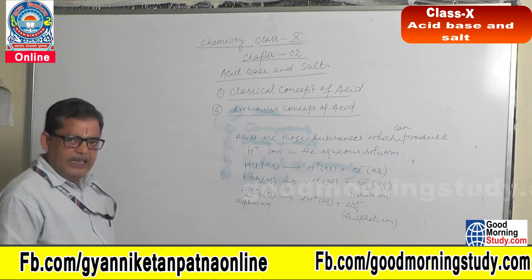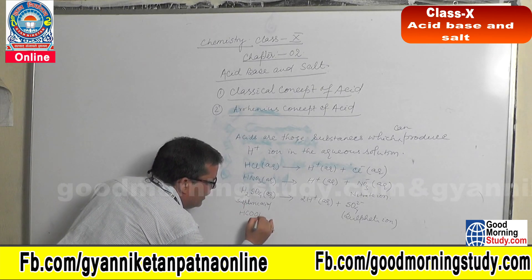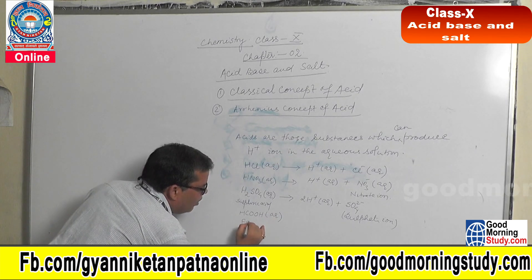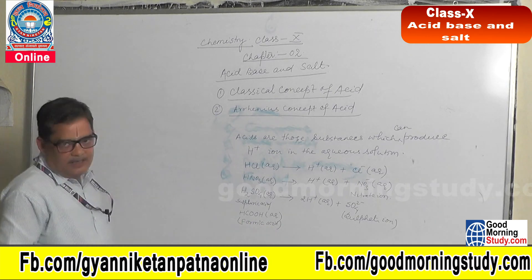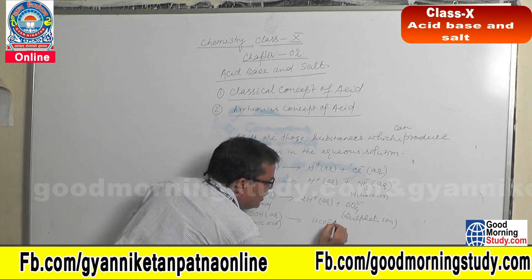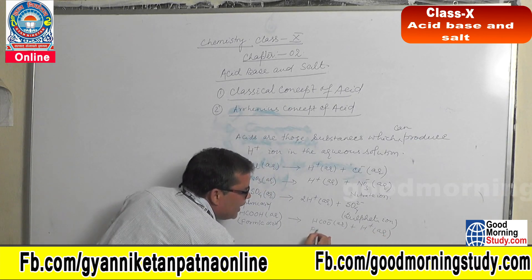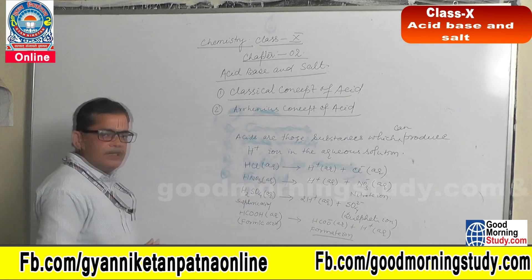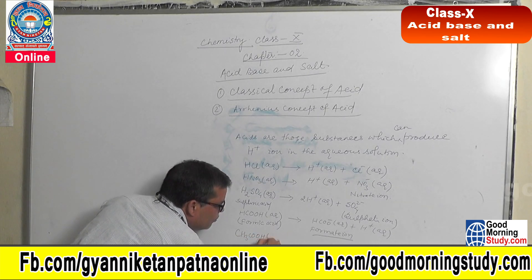Similarly, you can take so many examples. Another acid is HCOOH — what is the name of this acid? This is called formic acid. Formic acid will produce HCOO- plus H+. HCOO- is known as the formate ion.